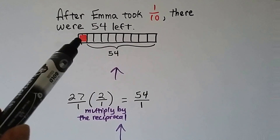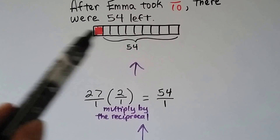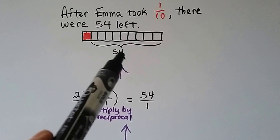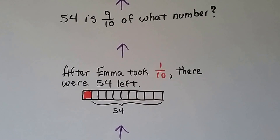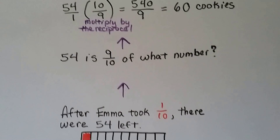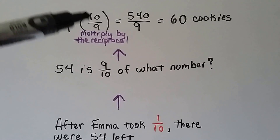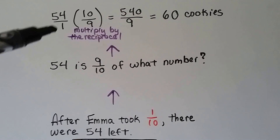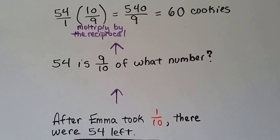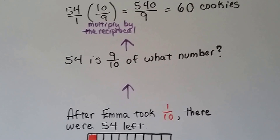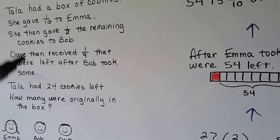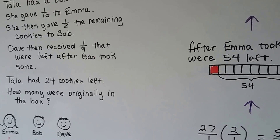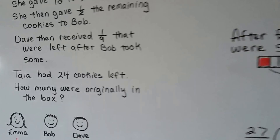So if Emma took one-tenth, here's ten-tenths as one whole. If she took one-tenth and then there were fifty-four left, fifty-four is now nine-tenths of what number? We do fifty-four over one times the reciprocal, ten over nine. Fifty-four times ten is five-hundred forty, one times nine is nine, and we find out she had sixty cookies originally. So we had to work backwards because each fraction was taken of the remaining amount, compared to the first problem where fractions were taken of the total amount.